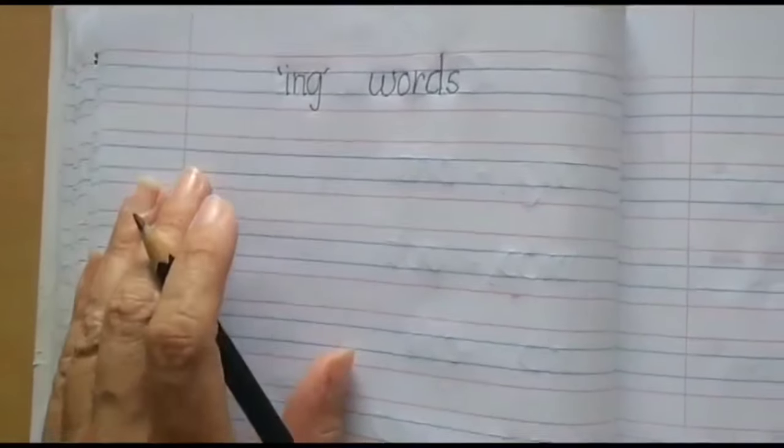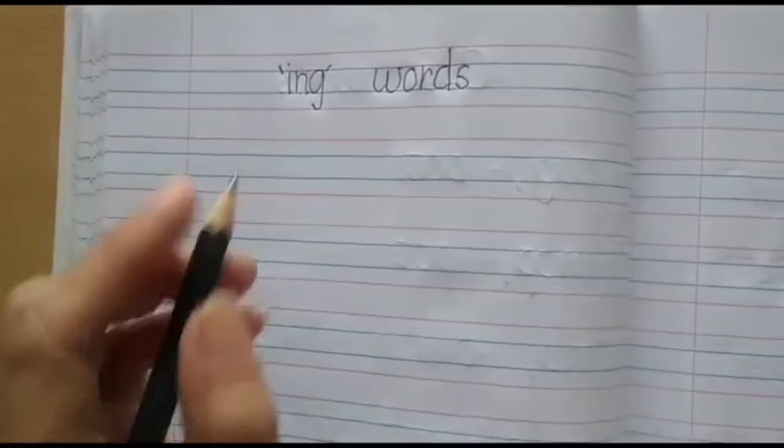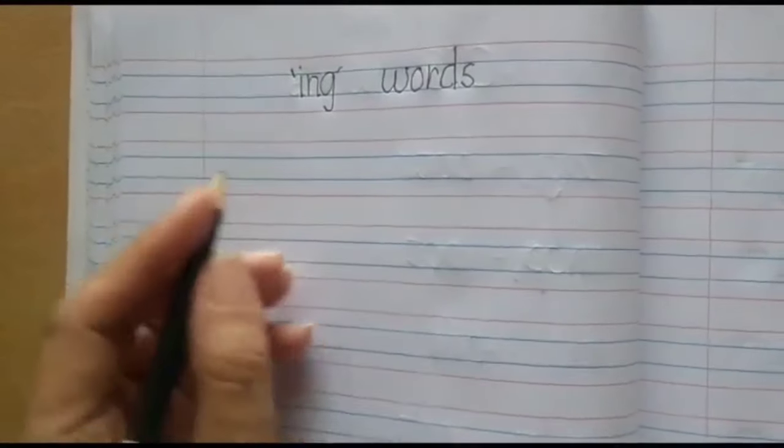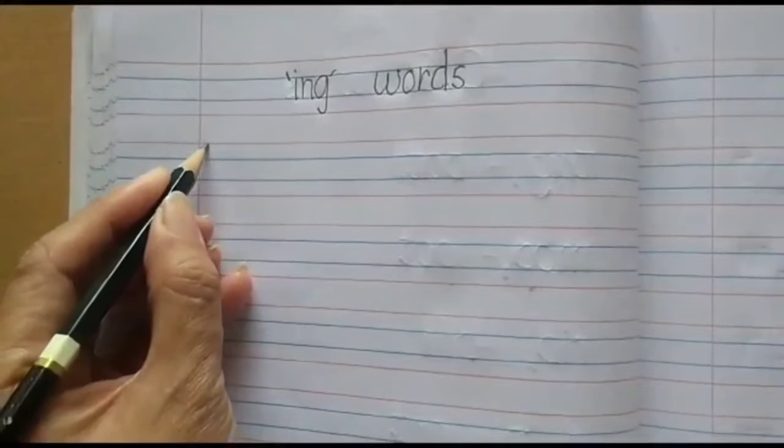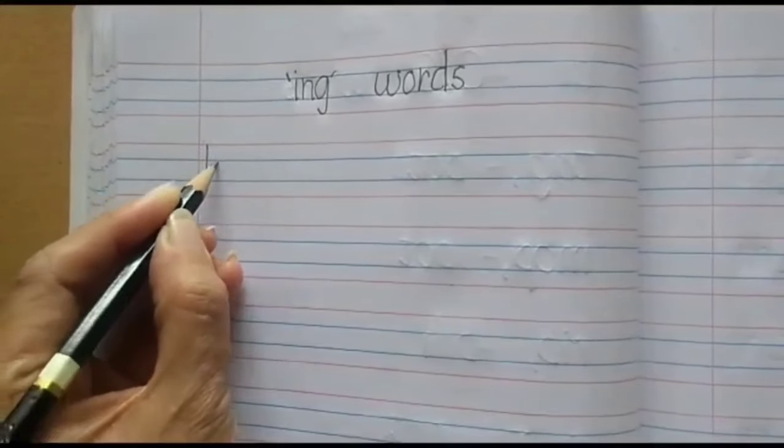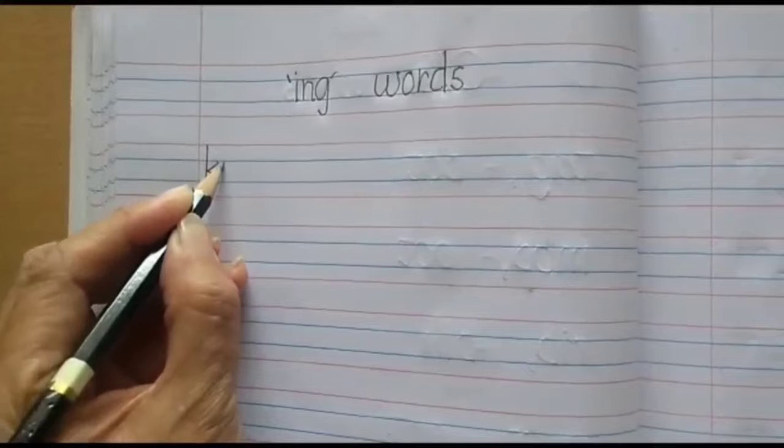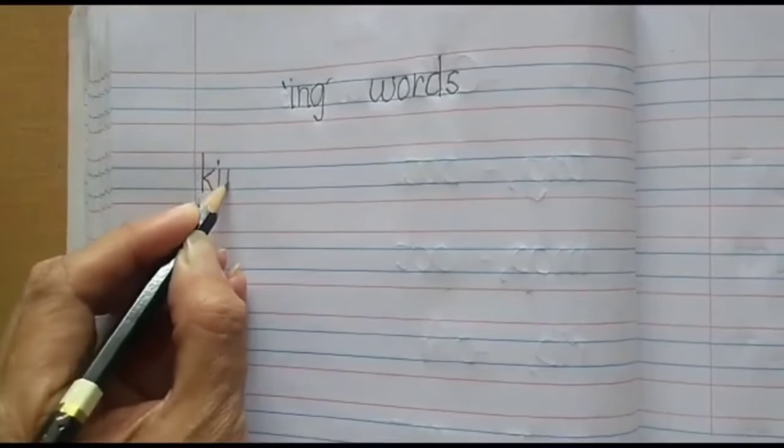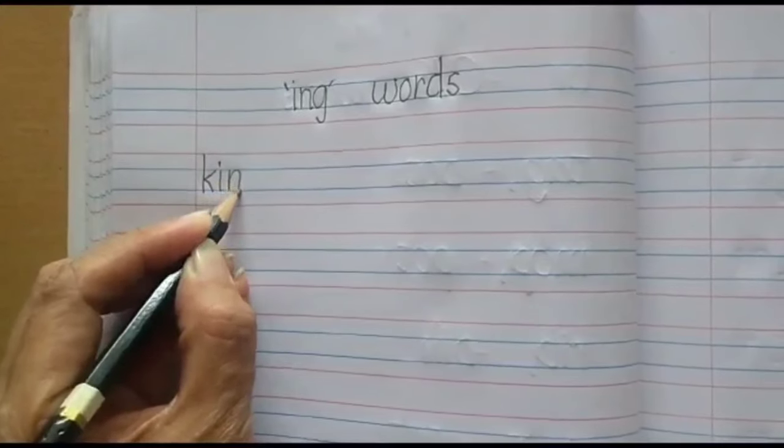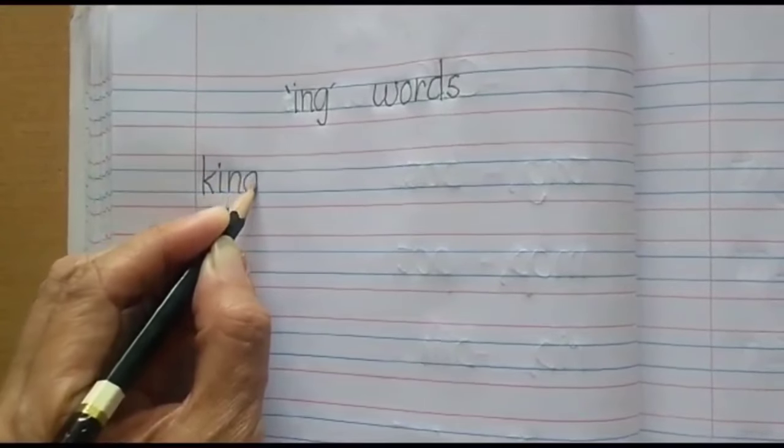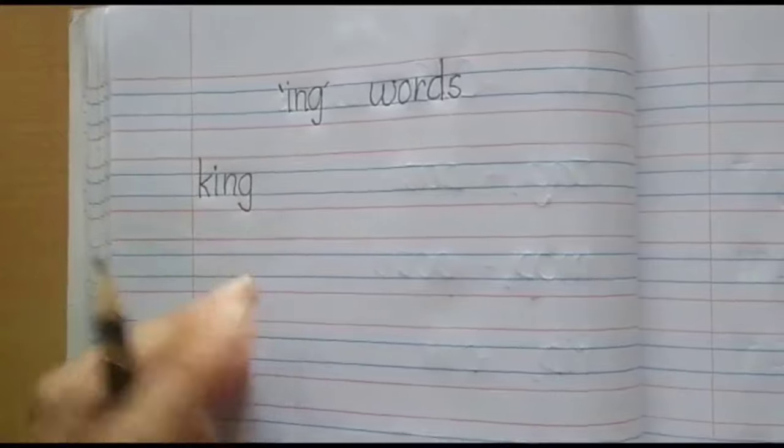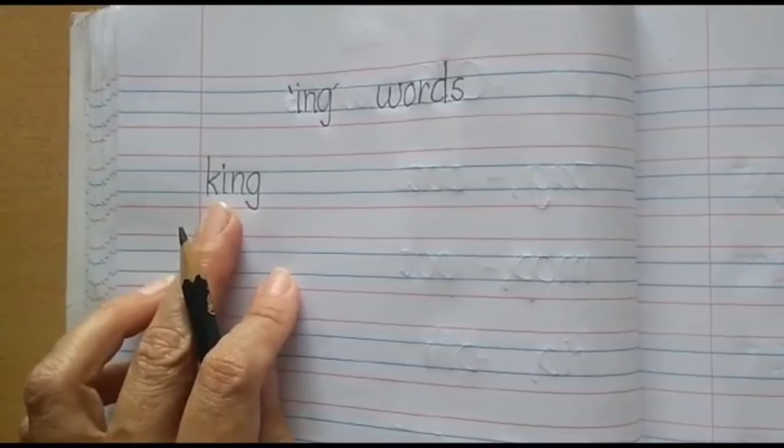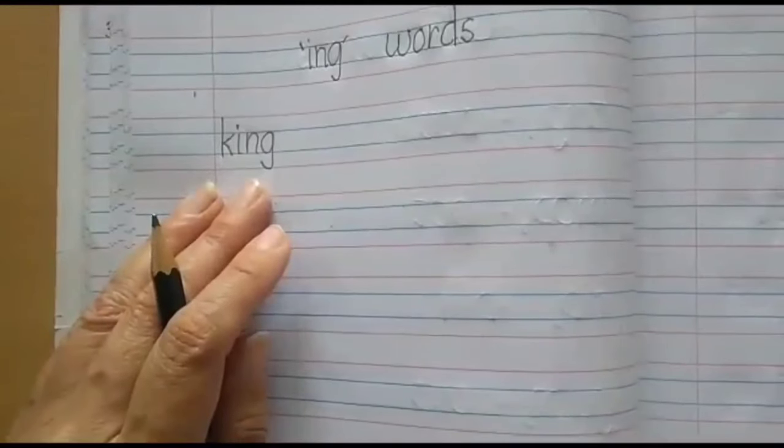Let's write the first word. We will write next to the margin. The word is king. Children, please repeat after me. The word is king. After writing king, in the next line, we will write.